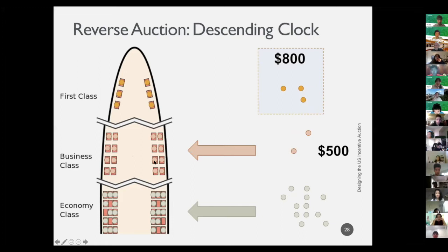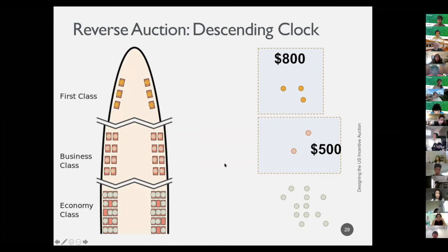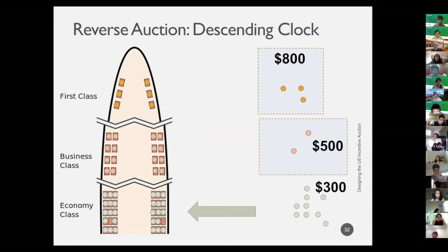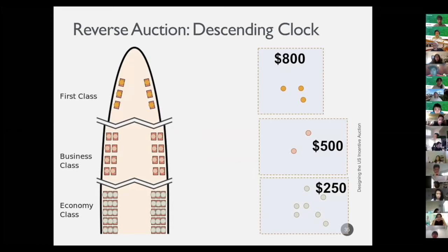At $500 business class becomes full, so the airline pays those two passengers $500. It continues lowering the price: $400, $300, $250 — at $250, economy class becomes full. The airline offers those seven passengers $250. This is called a descending clock auction, where prices go down over time.